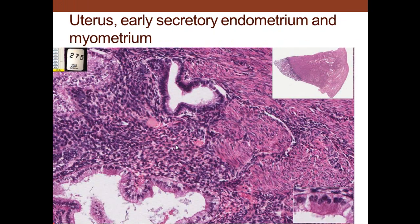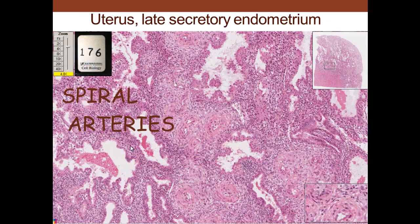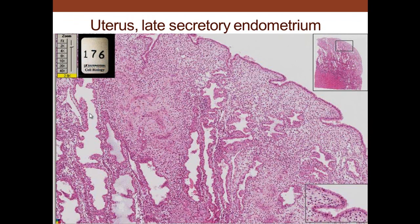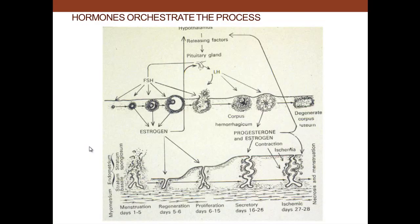Going down to the myometrium, you can see the smooth muscle layer and the secretory epithelium — this is the luteal phase or secretory phase. The endometrium has lots of spaces for the glands to secrete. The spiraling arteries are still providing nutrients for this large functional layer endometrium. In the late secretory phase, there are big spaces with secretions, and this is the phase where the glands produce the most glycogen.